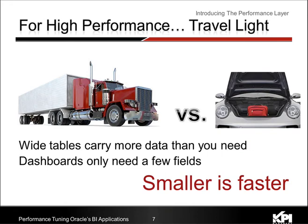Let's talk about some concepts as to why you may have a performance problem. The first thing is we want to be thinking about traveling light. A big wide table carries a lot more data than you're actually going to need in your dashboard. If you think about a typical customer table in the BI Applications, there are well over 100 fields — many of them are not empty. The bigger and wider a table is, the slower it's going to be. Your dashboard will typically use only a few of those fields, whether in a filter, a prompt, a column selector, or a row header. Smaller is going to be faster — it simply has less weight to move around.